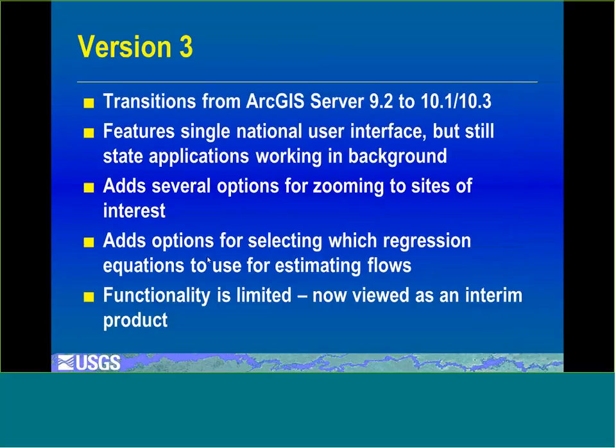Version 3 transitions from version 2, which was developed using ArcGIS Server 9.2, over to ArcGIS Server 10.1 and 10.3. It features a single national user interface, but state applications still work in the background. It adds several options for zooming to areas of interest and options for selecting which regression equations to use for estimating flows. We were originally planning on version 3 to be around for a while, but we've decided to totally revamp the user interface to be more user-friendly, so version 3 is now an interim product, to be replaced by version 4, hopefully before the end of the calendar year.